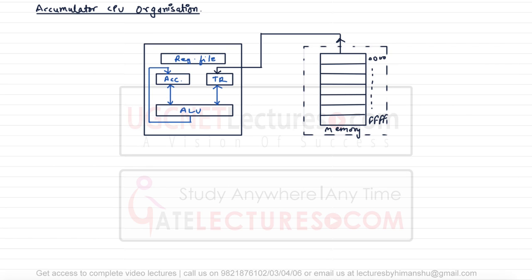The next type of organization is the Accumulator CPU organization. In this organization, the first operand is always present in the accumulator and the second operand is either present in the register or in the memory. As you can see in the diagram, we have a register file and a memory. After data manipulation, the result is always placed inside the accumulator. In the CPU design, only one accumulator is present, so the accumulator becomes a default location. The compatible instruction formats are only one-address instructions.